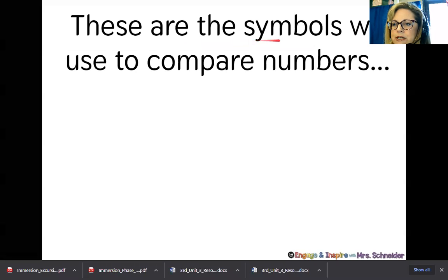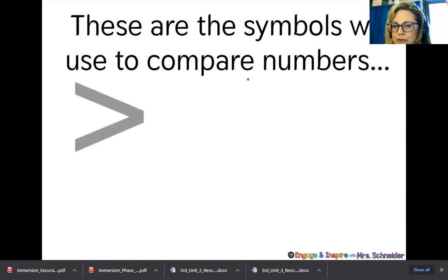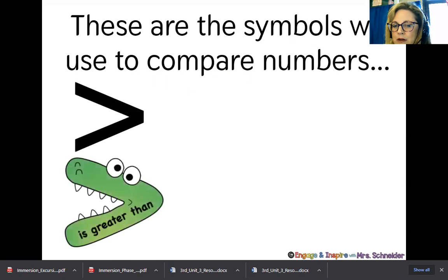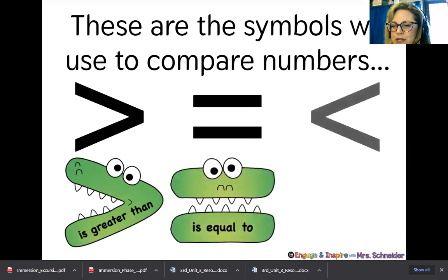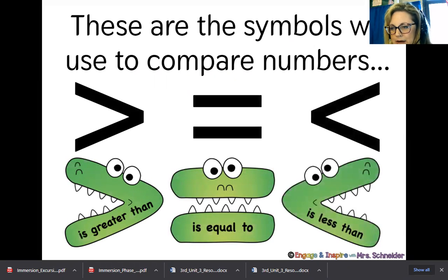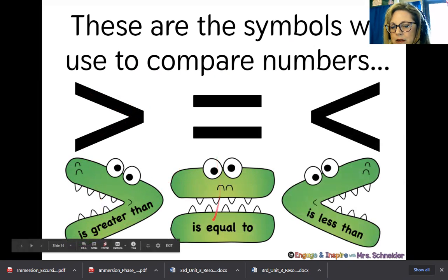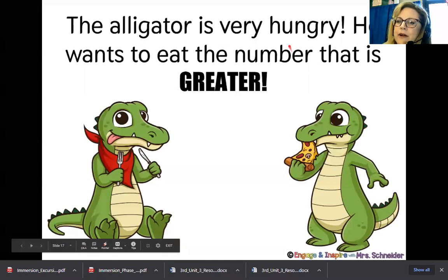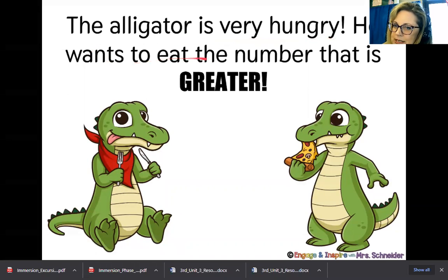So these are the symbols we use to compare numbers. We use this one, greater than. We use this one, which is equals to. And we use this one, which is less than. So the symbol, when you see this symbol, you have to think is greater than, is equal to, and is less than. The alligator is very hungry. He wants to eat the number that is greater. And we already said that greater means bigger or more.